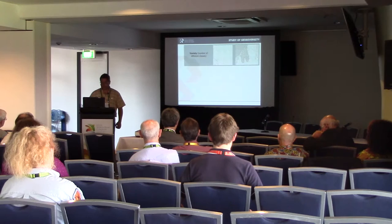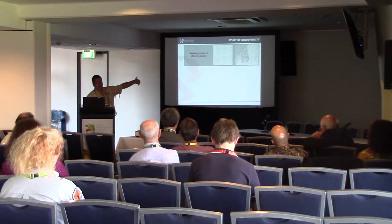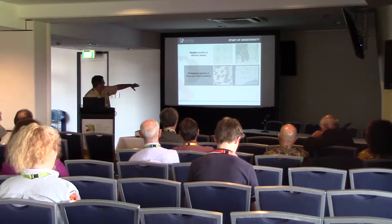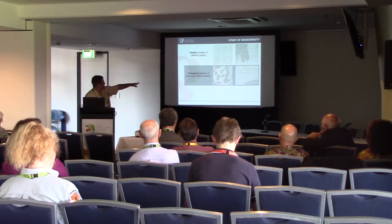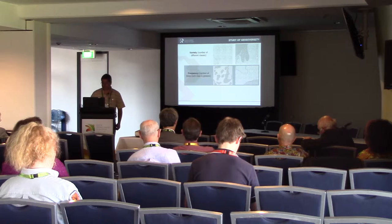Variety, frequency, and distribution. Variety means how many different classes we have. On the left you have low variety, on the right you have higher variety — more classes, less classes, that's the variety. Frequency means how frequently they are found. On the left you have one class that is very frequent, and others that are less frequent on the right. So it depends on the number of times you find each of those classes.